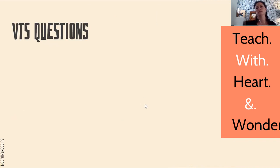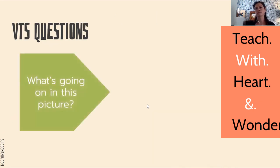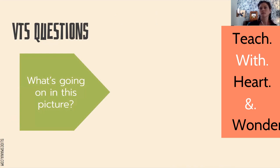What we just did is something called VTS — Visual Thinking Strategies. The first question you ask is: what's going on in this picture? In the process of VTS, you're trying to get your students to really unpack what they're seeing. It's very similar to close reading — you read it once, then you go back and try to get more depth. It's the same with this visual thinking strategy.